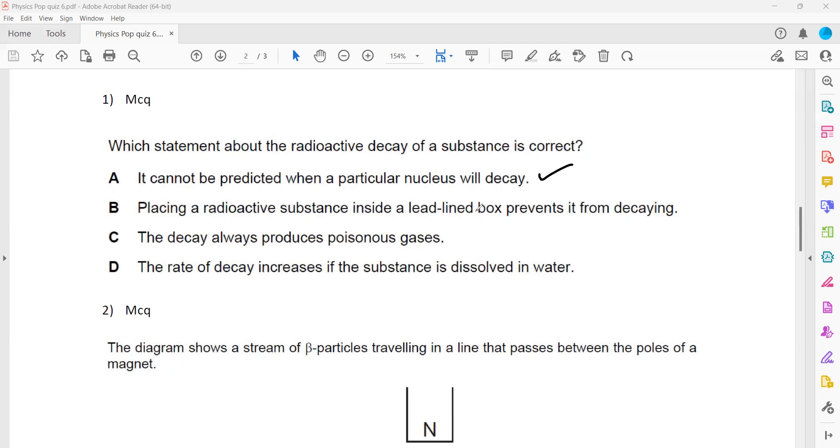Placing a radioactive substance inside a lead-lined box prevents it from decaying. It will not - the substance will decay, but it will block the radiation. Radiation won't come out, but the substance will still decay. If you have any radioactive material kept in a lead-lined box, the substance will decay and emit radiation, but the radiations are not able to escape as the lead will stop all the radiation from the source, but it will not stop it from decaying.